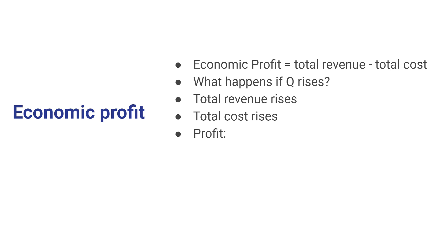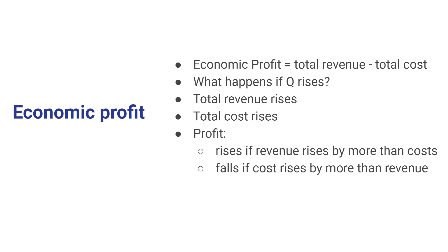Whether profits rise or fall depends on whether revenue rises by more or less than costs do. If revenue goes up by more than cost, the firm will end up with higher profits. For example, if you sell one more unit and gain $10 in revenue but it costs you $8, your profits increase by $2. On the other hand, if your costs go up by more than your revenue — say you receive $8 in additional revenue but it costs $9 to produce that extra output — then profits will go down. In general, if additional revenue exceeds additional cost, the firm produces more; if additional cost exceeds additional revenue, it cuts back.